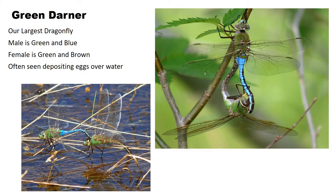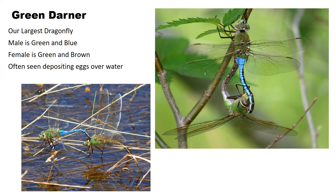This is the green darner — our largest dragonfly, definitely pushing the limits of three inches by three inches. The male is green and blue, the female is green and brown. Just remember: if you see green and blue or green and brown together on a large dragonfly, it's the green darner. I see these a lot depositing their eggs — out of hundreds of dragonfly photos, this is one of only two species I've captured doing that.